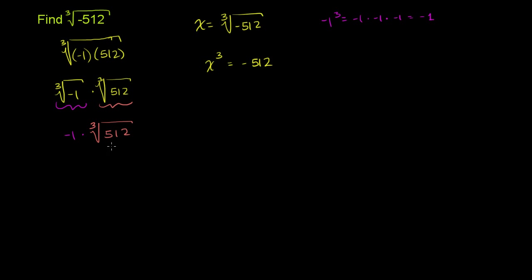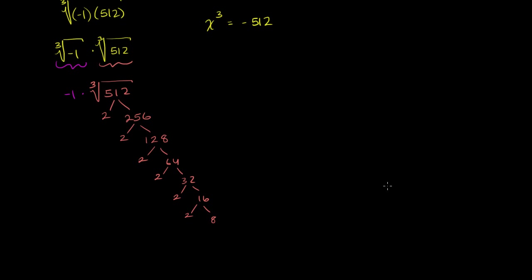Let's do the prime factorization of 512. 512 is 2 times 256; 256 is 2 times 128; 128 is 2 times 64; 64 is 2 times 32; 32 is 2 times 16; 16 is 2 times 8; 8 is 2 times 4; and 4 is 2 times 2. So multiplying 2 nine times gives 512, meaning 2 to the ninth power equals 512.